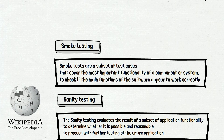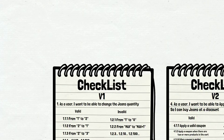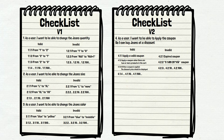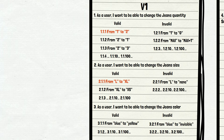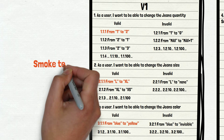Let us remind you what smoke tests are: a subset of test cases that cover the most important functionality of a component or system, used to assess whether the main functions of the software appear to work correctly. So in the scope of our testing, we need to select test cases from version 1 of the website and run those first — not all test cases, only those which check the main functions. In our case it would be one test case per user story: change the quantity from 1 to 2, change the size from L to XL, and change the color from blue to yellow. These three test cases are the smoke test suite.